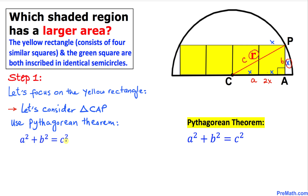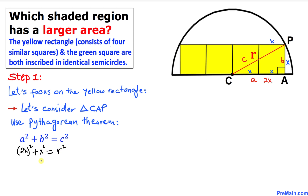Here is our Pythagorean formula: a² + b² = c². Filling in the values — a is 2x, so we get (2x)² + x² = r². Simplifying, that gives us 4x² + x² = r².